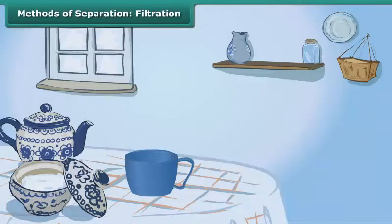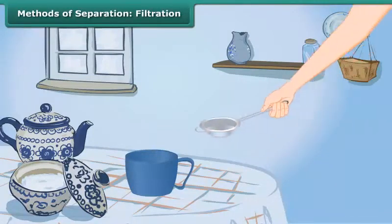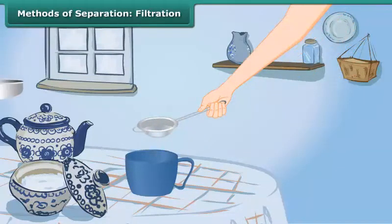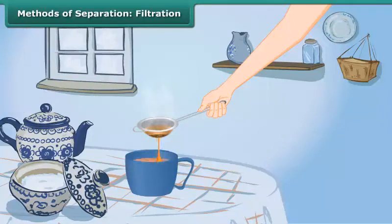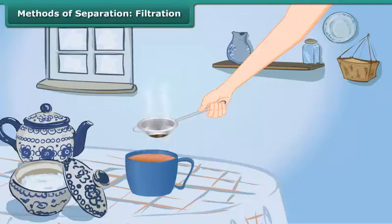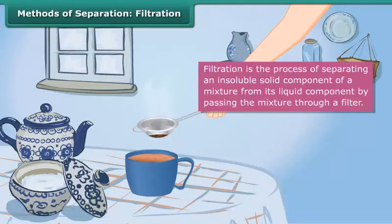After preparing tea, this tea stall owner pours the mixture into the tea strainer. The tea passes through the holes of the tea strainer, leaving behind the tea leaves in it. This process of separation is known as filtration.